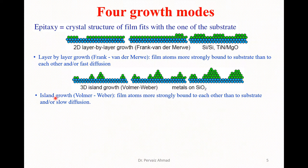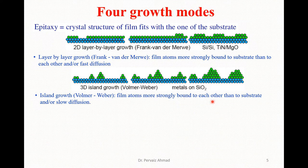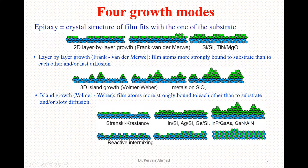The second growth mode is island growth, also called Volmer-Weber growth, or 3D island growth. In this structure we deposit metal on silicon dioxide. Here, film atoms are more strongly bound to each other than to the surface, and this occurs through slow diffusion. In 2D layer-by-layer growth the film atoms are more tightly bound to the substrate atoms, while in 3D island growth the film atoms are most tightly bound to each other compared to the substrate atoms.